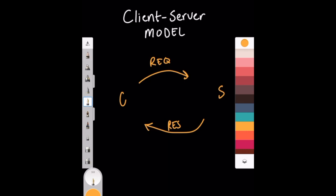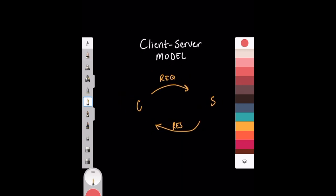In order for the client to send a request, it needs to know certain pieces of information. One part is the IP address of the server. For example, an IP address can look something like 127.0.0.1 — this is actually a very special IP address because it represents our local IP address, or the IP address of our home. It's separated by three dots with four components.